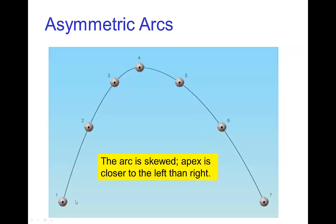The other most common error in arcs is to have the apex not in the center of the arc. So in this case, the two sides of the arc are parabolic, but they don't match each other. So the left side doesn't match the right side, and so we have the apex not in the center.